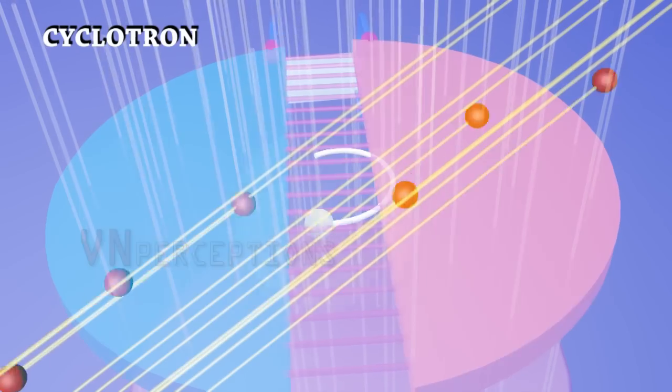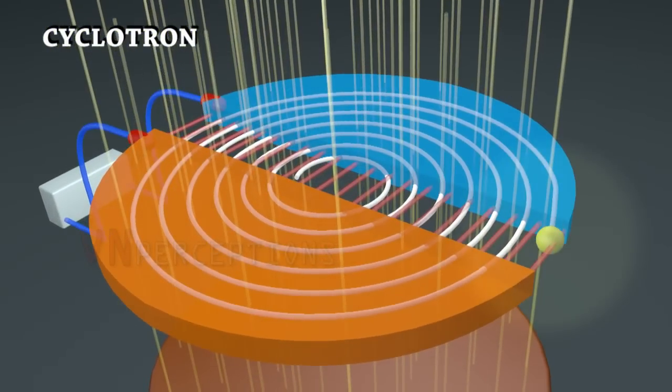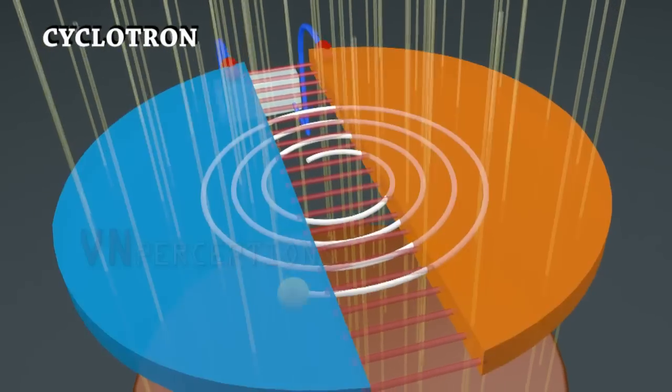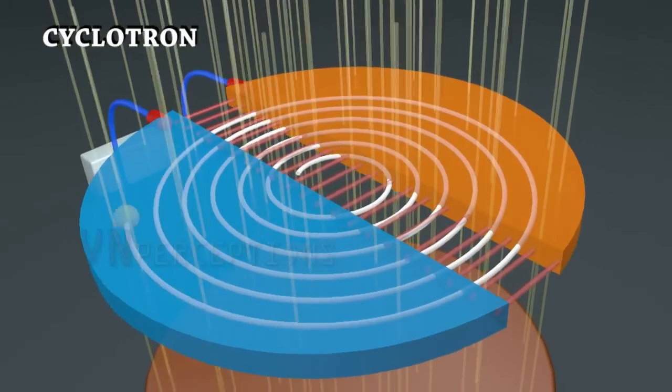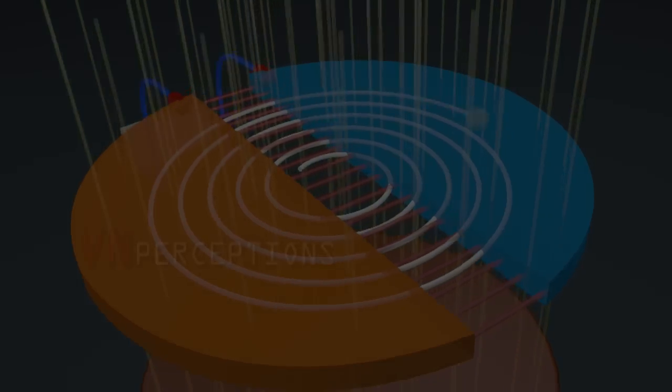A positively charged particle can be accelerated to high energy with the help of an oscillating electric field by making it cross the same electric field time and again with the use of a strong magnetic field.